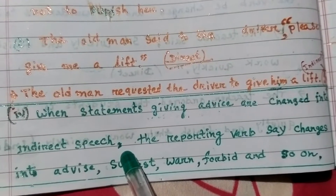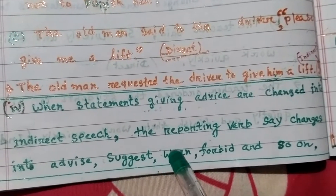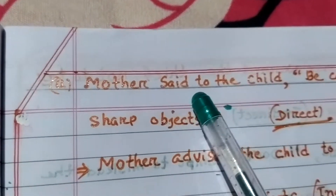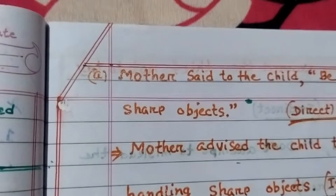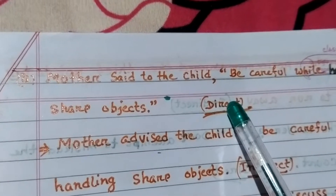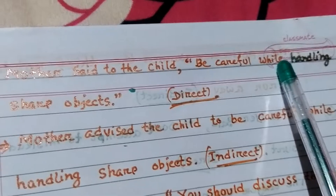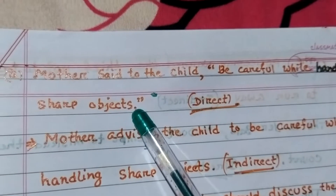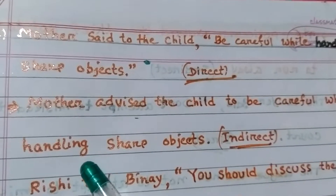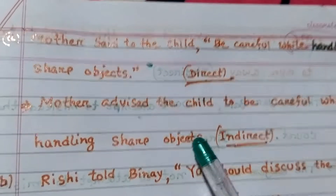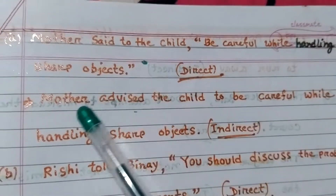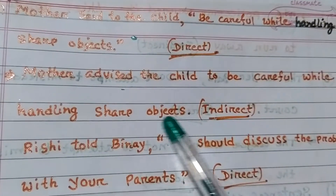Example A: Direct speech — 'Mother said to the child, be careful while handling sharp objects.' In indirect speech: 'Mother advised the child to be careful while handling sharp objects.' The reporting verb 'said' changes to 'advised' and 'be careful' becomes 'to be careful'.